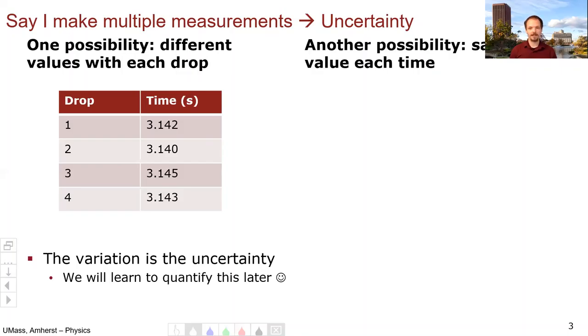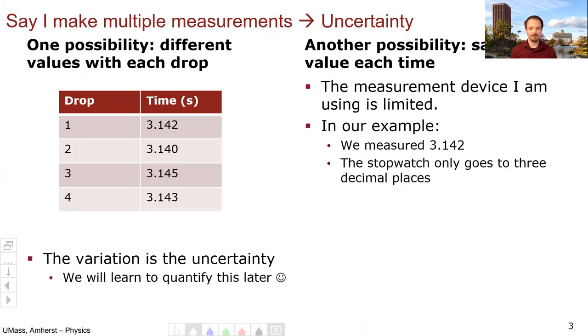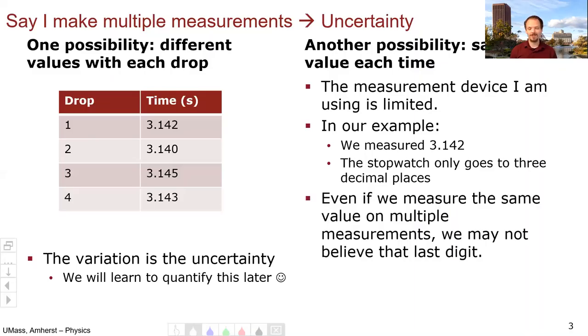There is another possibility: I get the same value each time. And this might be because the device I'm using has a limited precision. In our example, we measured 3.142. The stopwatch only goes to the millisecond. So even if we got 3.142 each and every time, we might not believe that last digit and assign an uncertainty of a millisecond. So we can either measure it from the variations, or if we can't measure it because our device isn't precise enough, we can assign an uncertainty.